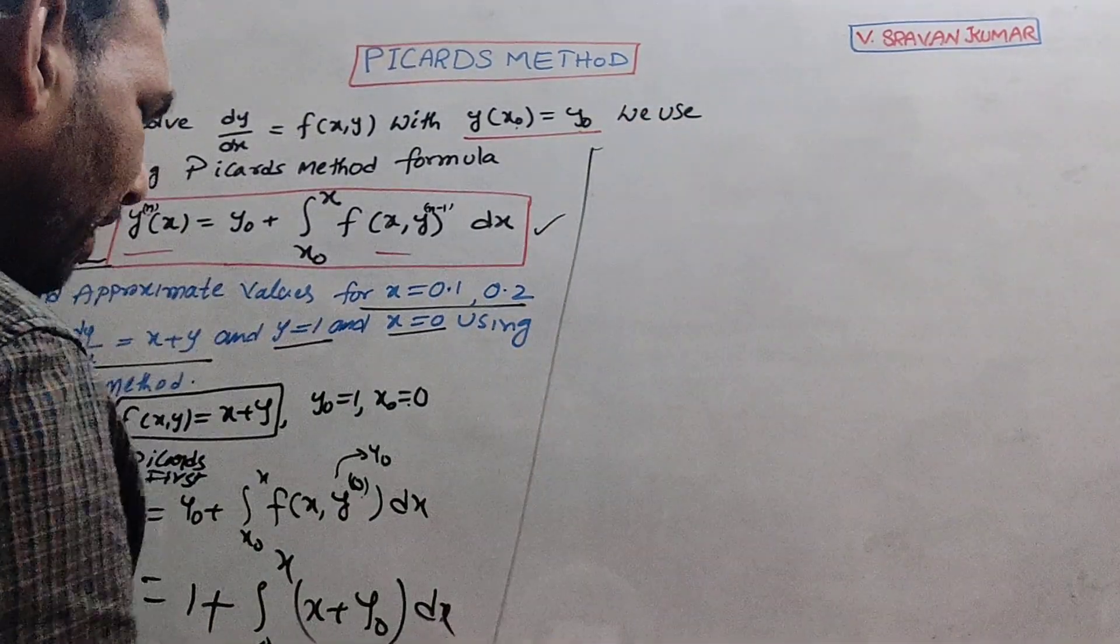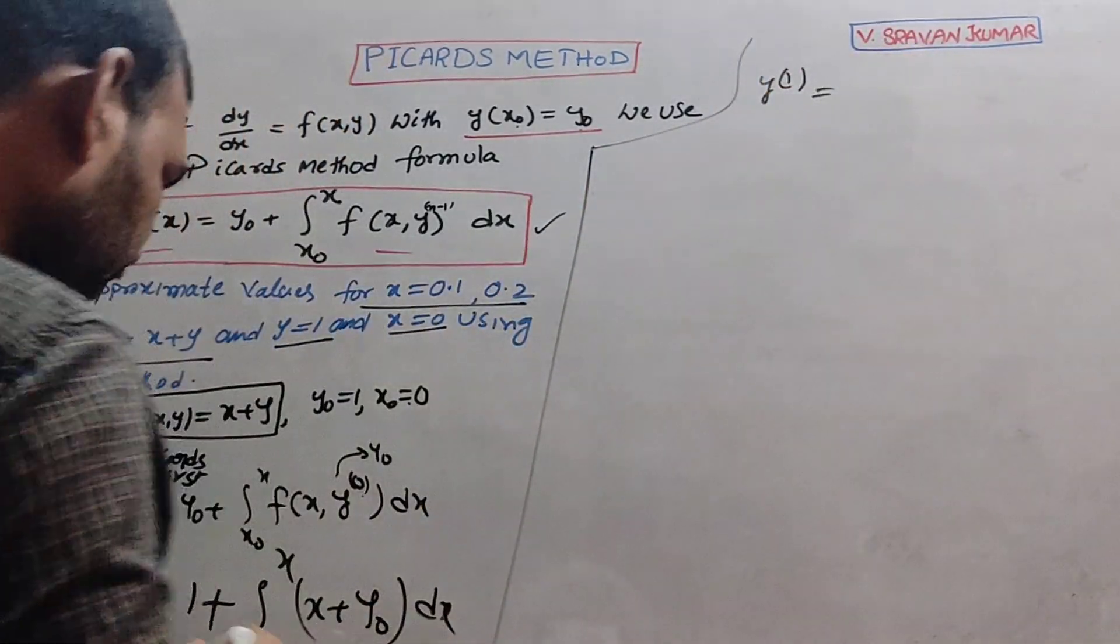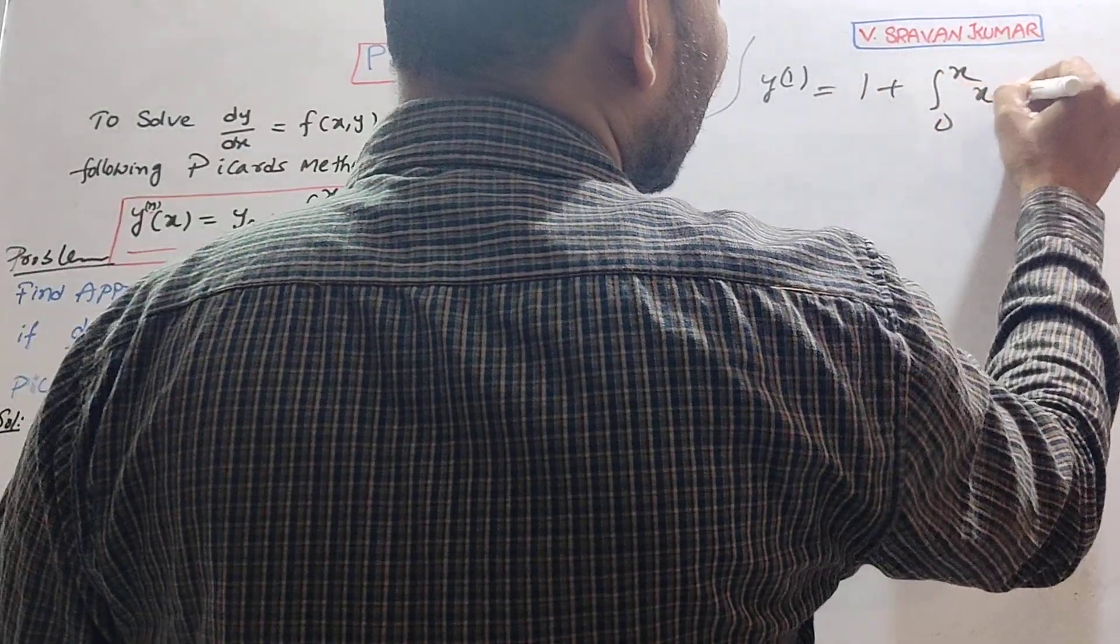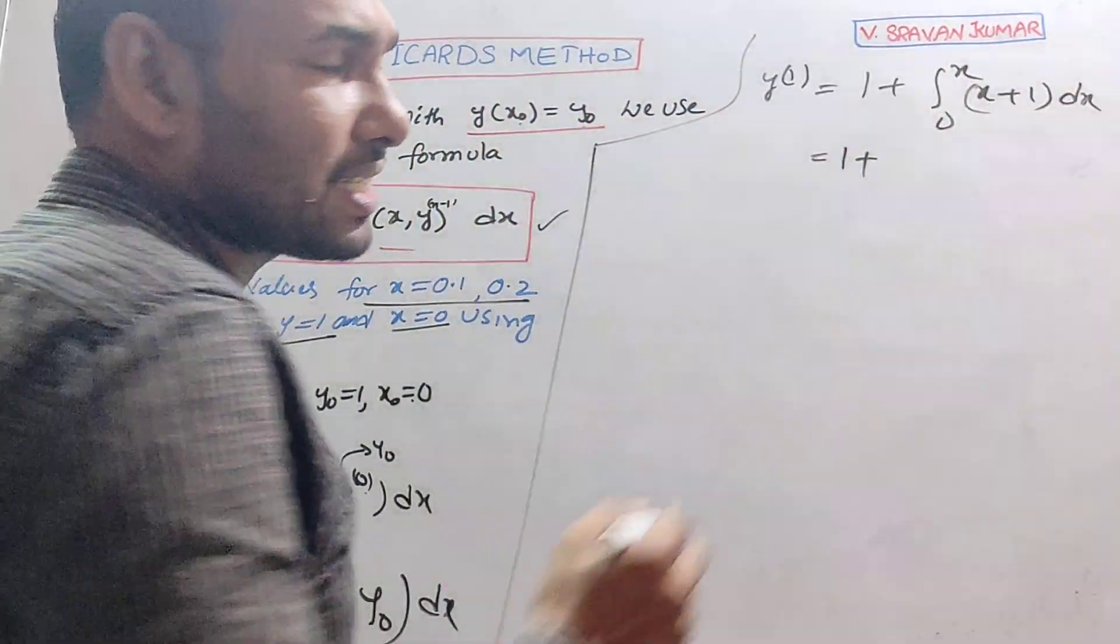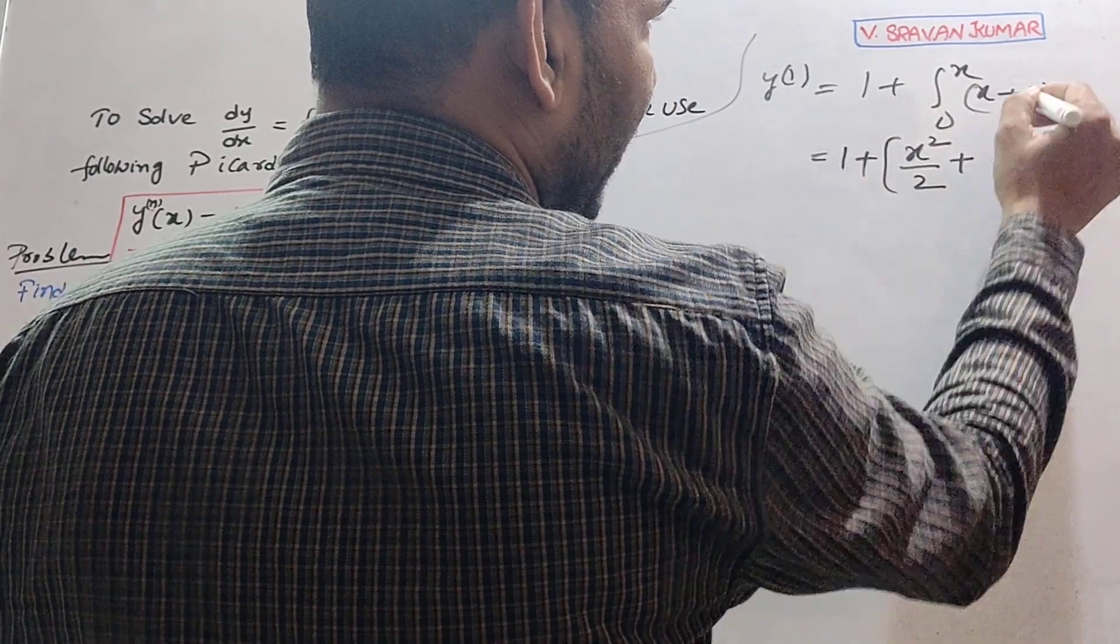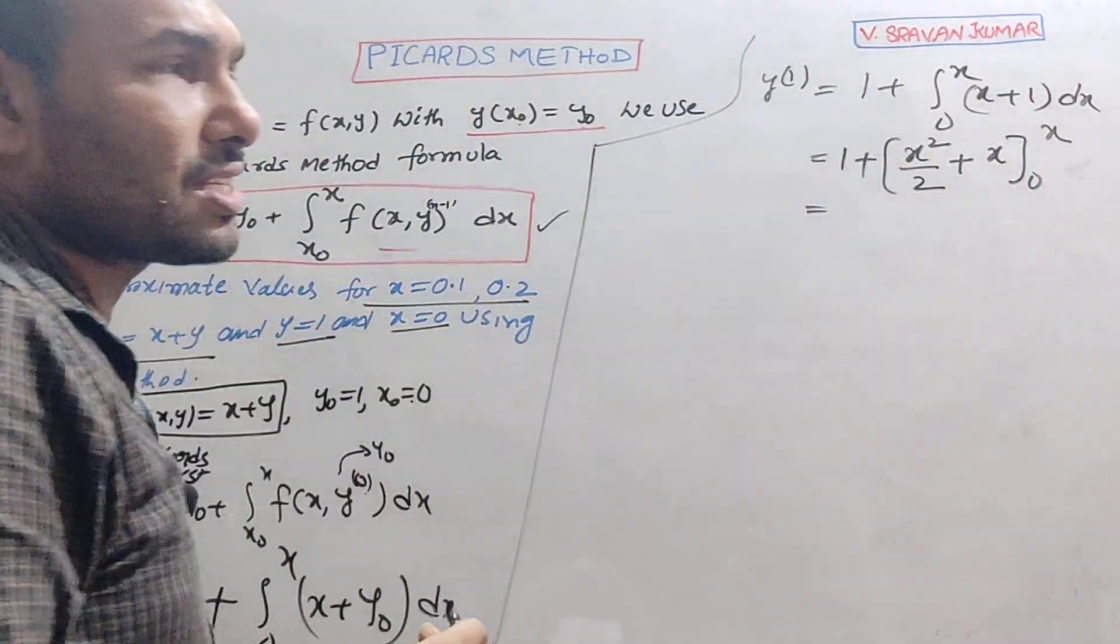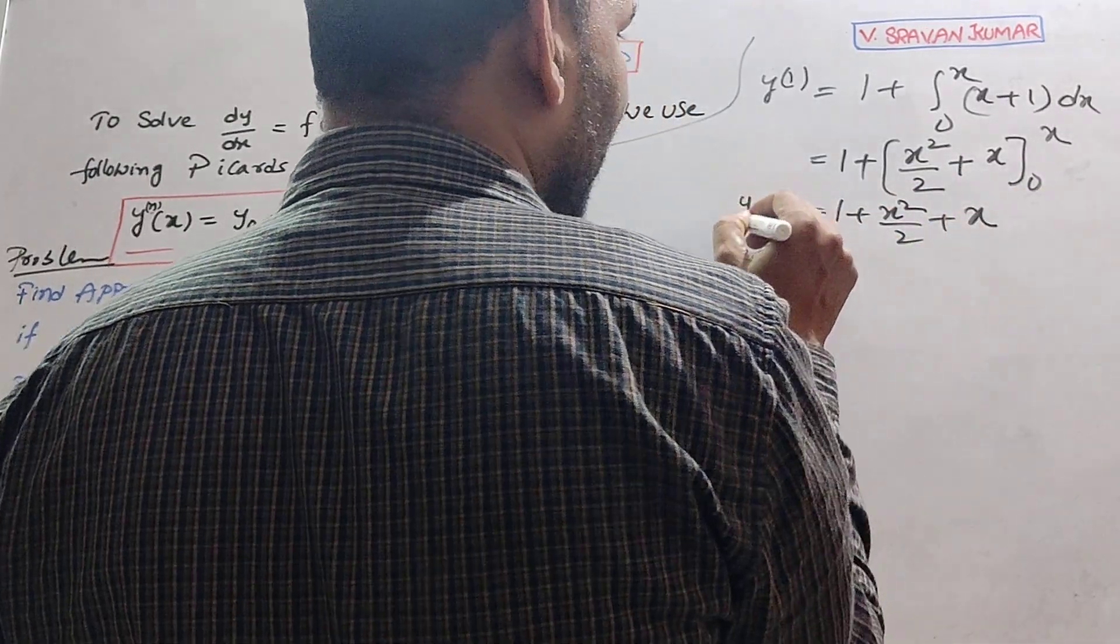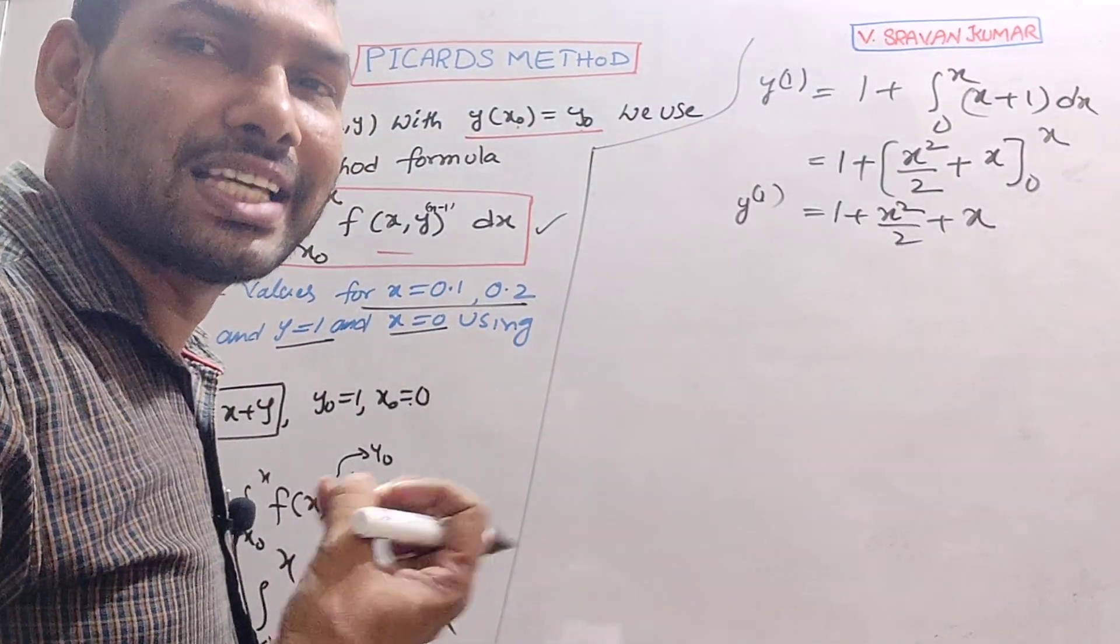Okay, what is y₀? y₀ value you know, y₀ is 1. So y¹ equal to 1 plus integral 0 to x (x plus y₀), where y₀ is 1. Now integrate - integration: integral x is x²/2, integral 1 dx is x, limits 0 to x, upper limit x. So y¹ = 1 + x + x²/2.